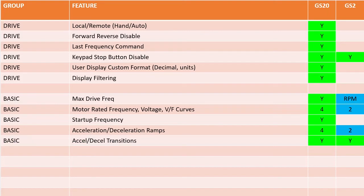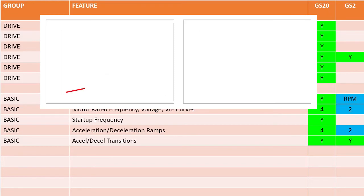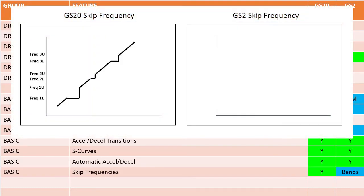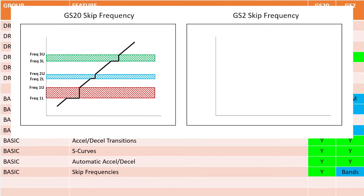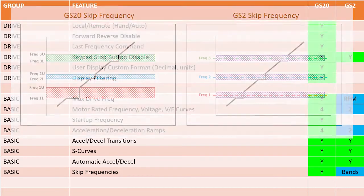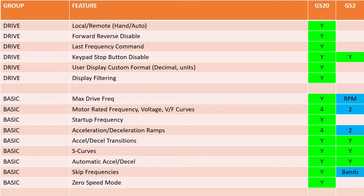Both drive families have acceleration and deceleration transitions so you can have one acceleration time during one part of the ramp and another during the second part — maybe accelerating slowly at the start to prevent overcurrent issues and then speeding up, or quickly getting close to speed then slowly approaching the final speed. Both families also have S-curves to smooth out transitions and options to automatically give you the fastest possible acceleration and deceleration times. The GS20 has upper and lower skip frequencies so each skipped frequency band can be unique, whereas the GS2 applies a single skipped band to all skip frequencies. The GS20 allows you to specify how the drive reacts if a frequency below the minimum allowed is requested — should it do nothing, apply a DC brake, or continue using the min frequency. And finally, the GS20 has regen options to give you more control over deceleration.